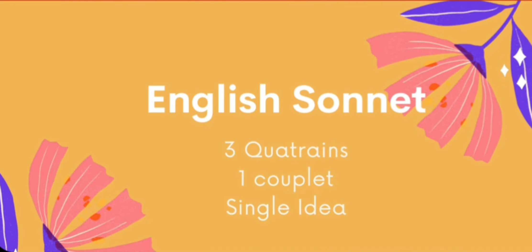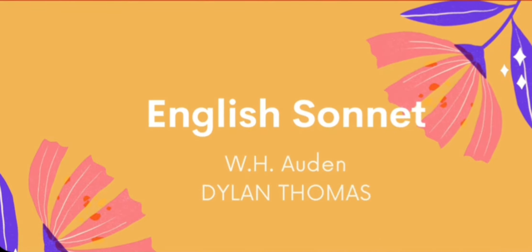This form is also called the classical form because it is the oldest form and other countries followed it. When Surrey brought the sonnet to England, he made certain changes in the structure — he divided the 14 lines into three quatrains and one couplet. Here a single idea prevails throughout the poem and the climax is reached in the final couplet. Shakespeare used it so splendidly that it is now called after his name: the Shakespearean sonnet.